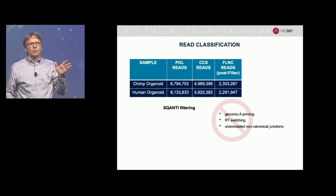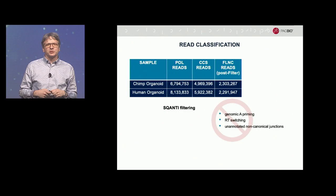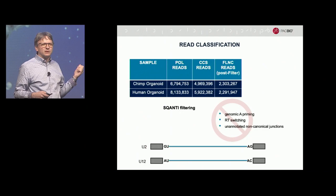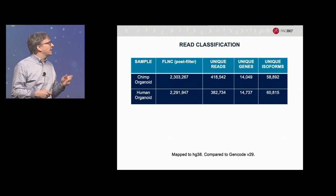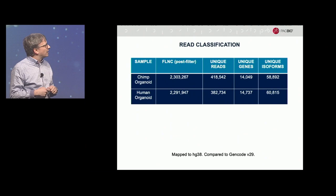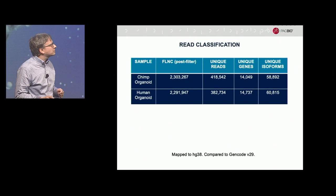There are also known RT switching artifacts that Scanti can filter out, and we remove unannotated non-canonical junctions — those that do not show the splice-site dinucleotides at the terminus of the intron known to be in the minor or major spliceosome. We deduplicate these reads, leaving about 400,000 full-length cDNA reads corresponding to these cells, covering about 14,000 unique genes when compared to GenCode, with about four isoforms per gene.